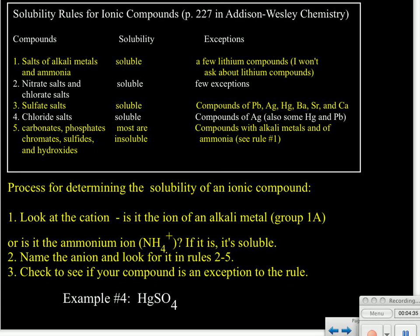Our fourth example is HgSO₄. Mercury is not a 1A metal, so we look at the anion: SO₄²⁻ is sulfate. Rule number three says sulfates are soluble, but we need to check the exceptions. The exceptions list compounds of lead, silver, and mercury — and there's mercury right there. This is an exception to rule three, so HgSO₄ is insoluble.